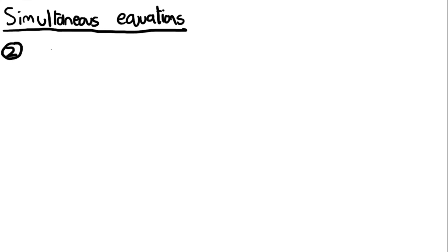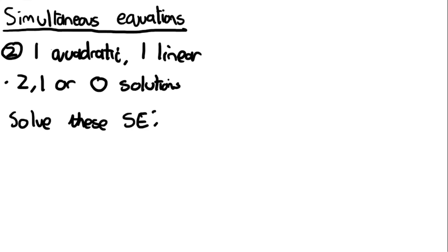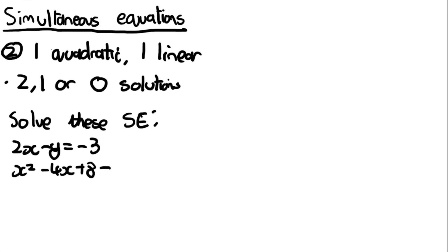The second type of question has one quadratic equation and one linear equation. For this type you could have 2, 1, or 0 solutions — I'll go over that more in the next video. The only method that works here is substitution; you can't use the calculator for it and elimination doesn't work either.